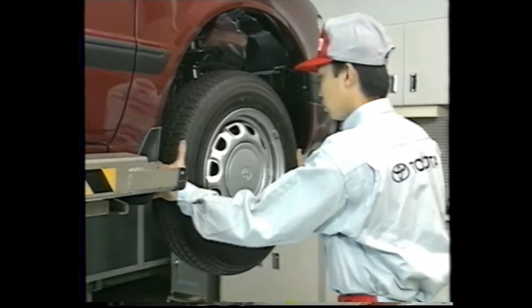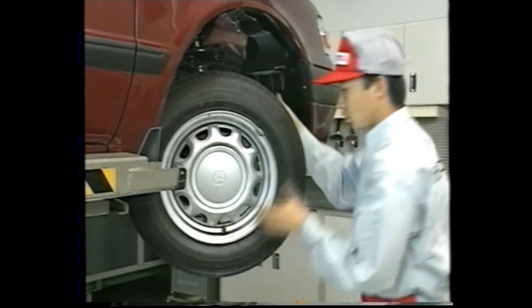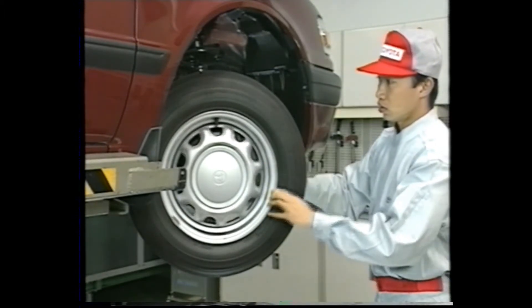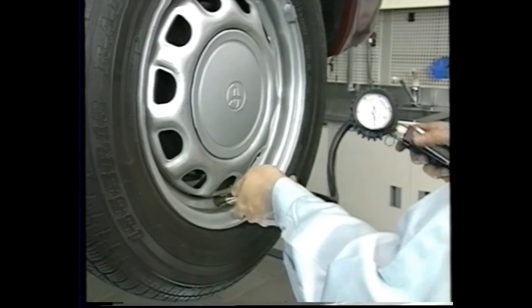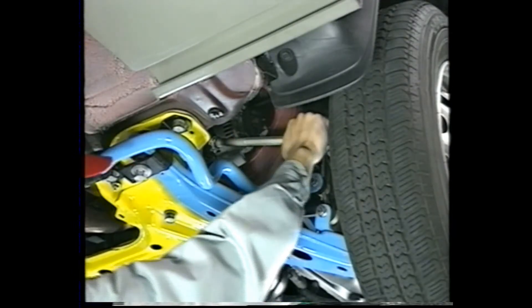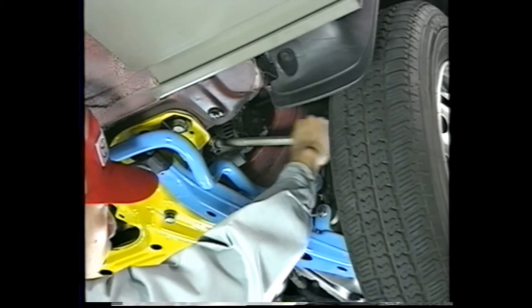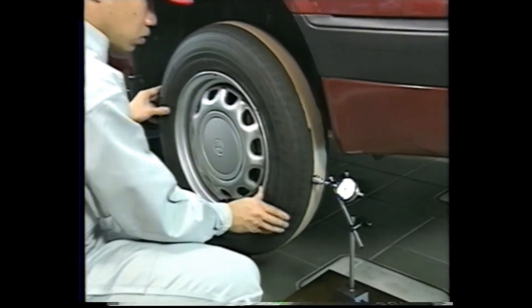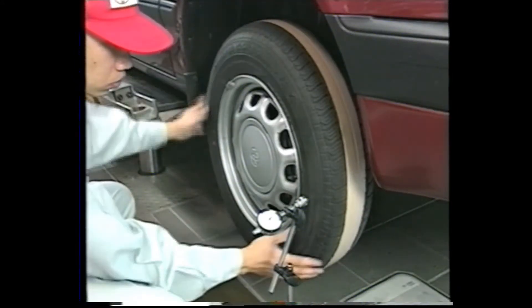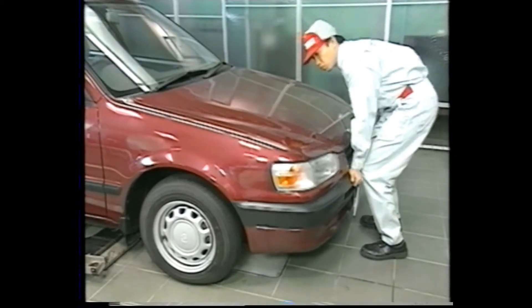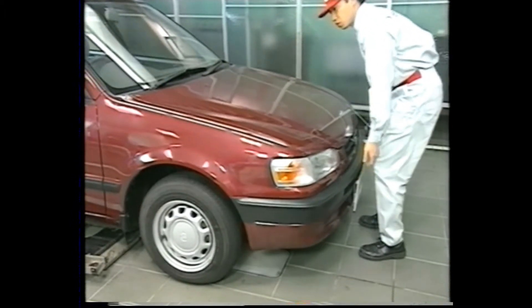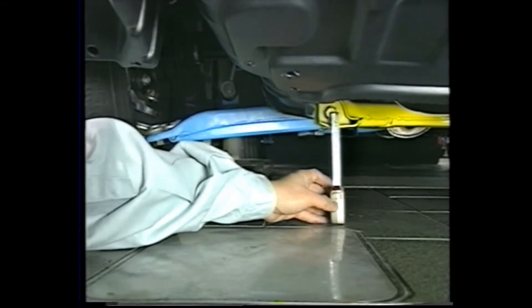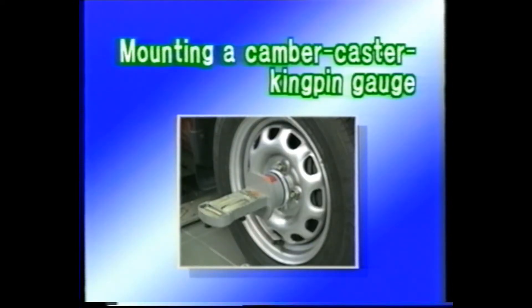Now let's see the actual wheel alignment procedure. First, check the following points: check the tires for improper wear, deformation, and improper inflation. Check suspension and steering linkage for looseness. Check the tires for run out using a dial gauge and confirm that the radial run out is less than 1.0 millimeters and lateral run out is less than 1.2 millimeters. Check that the shock absorbers function properly by performing the standard bounce test. Check the chassis-to-ground clearance and confirm that it is within specification. After finishing these checks, camber, caster, and steering axis inclination are inspected.